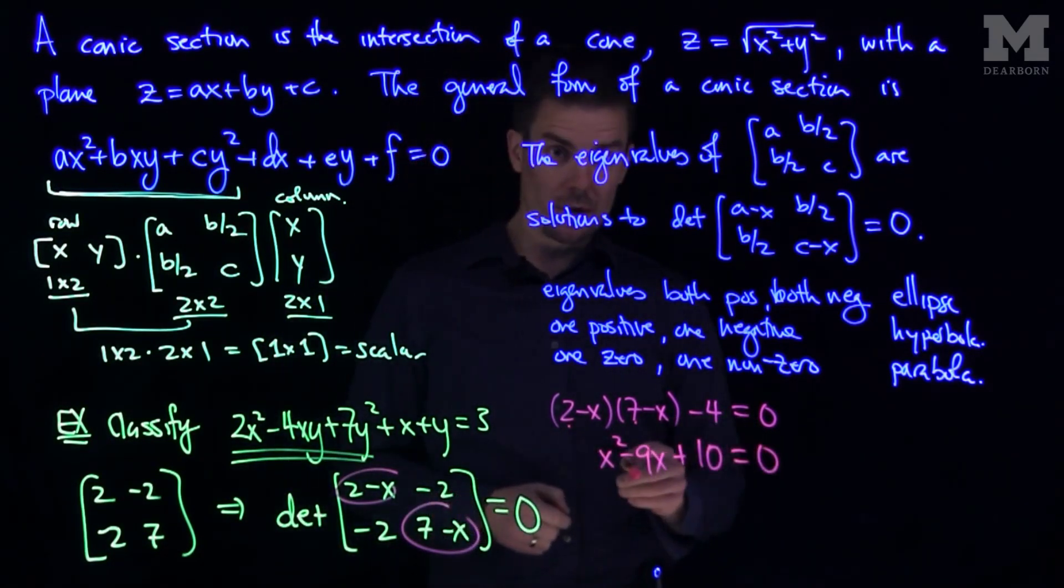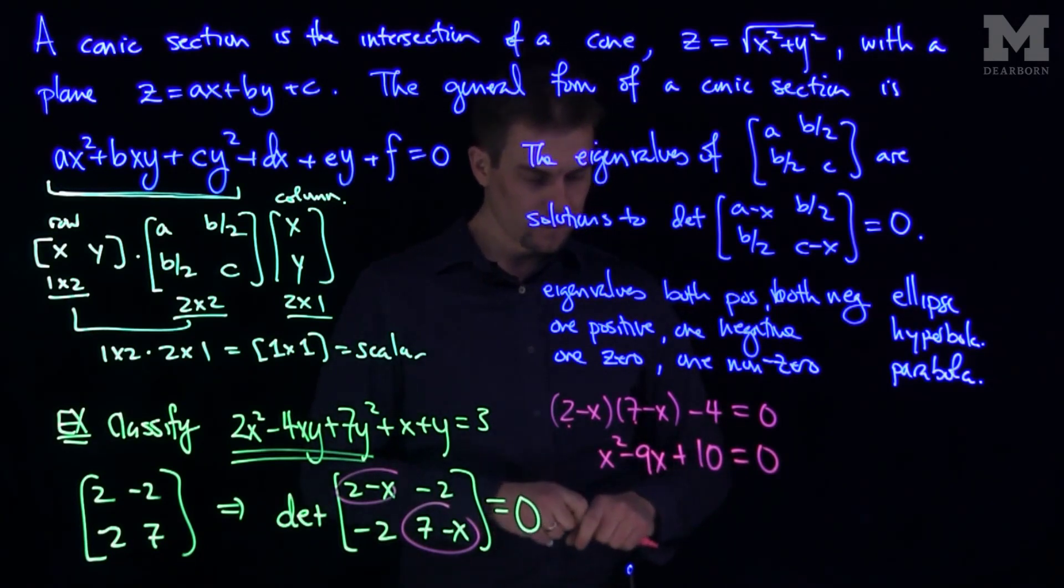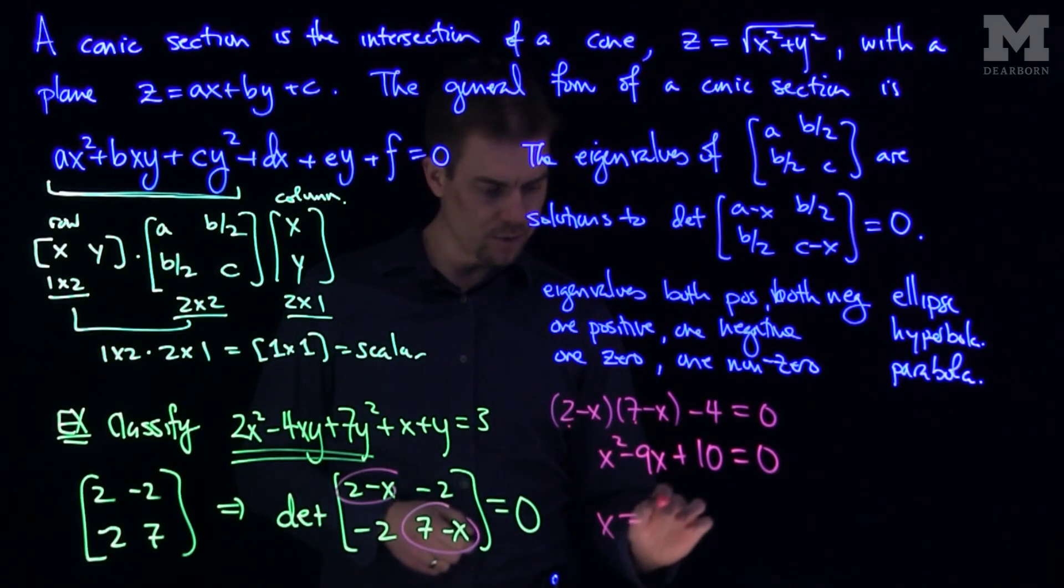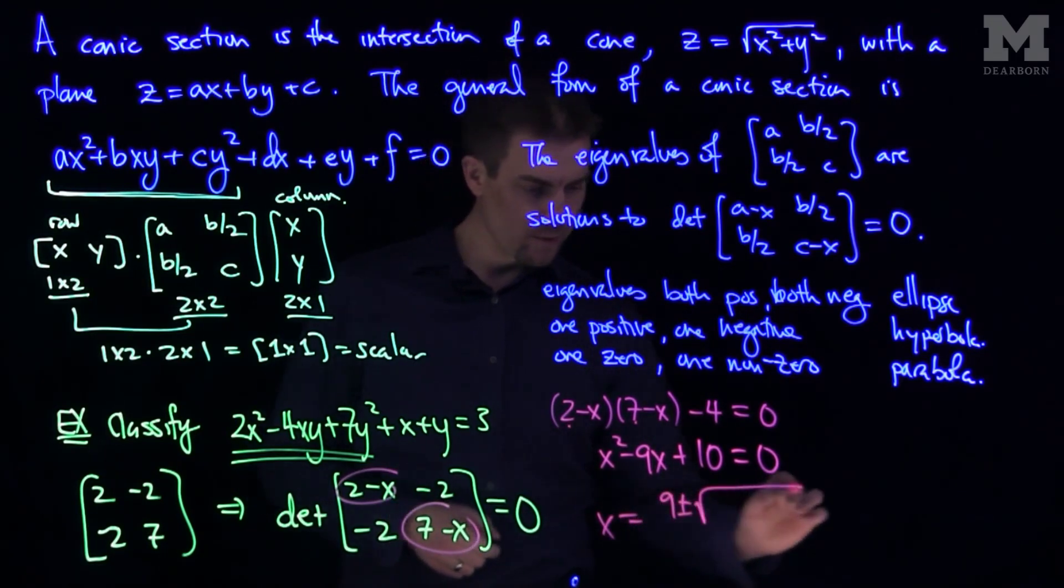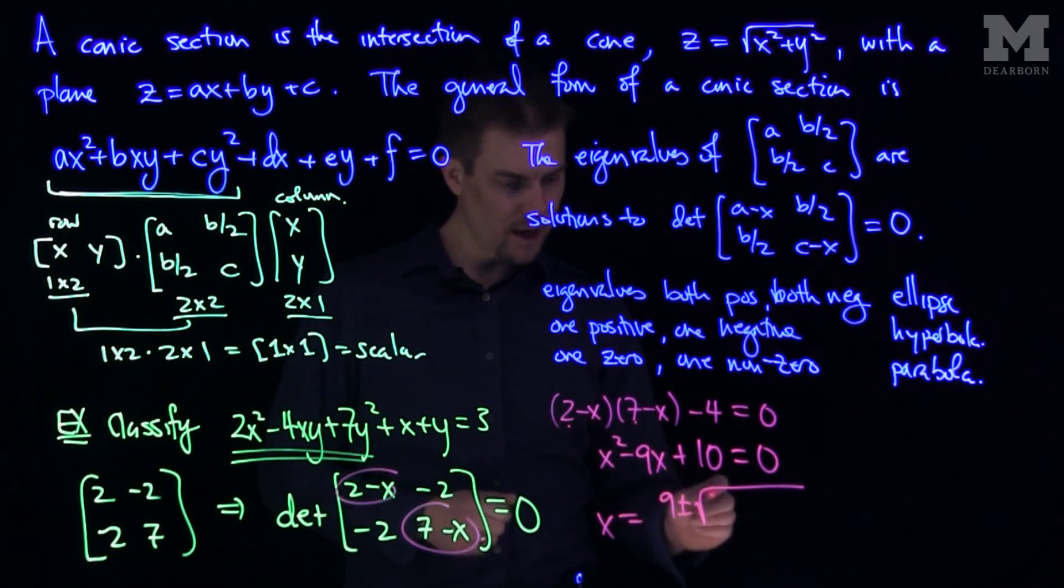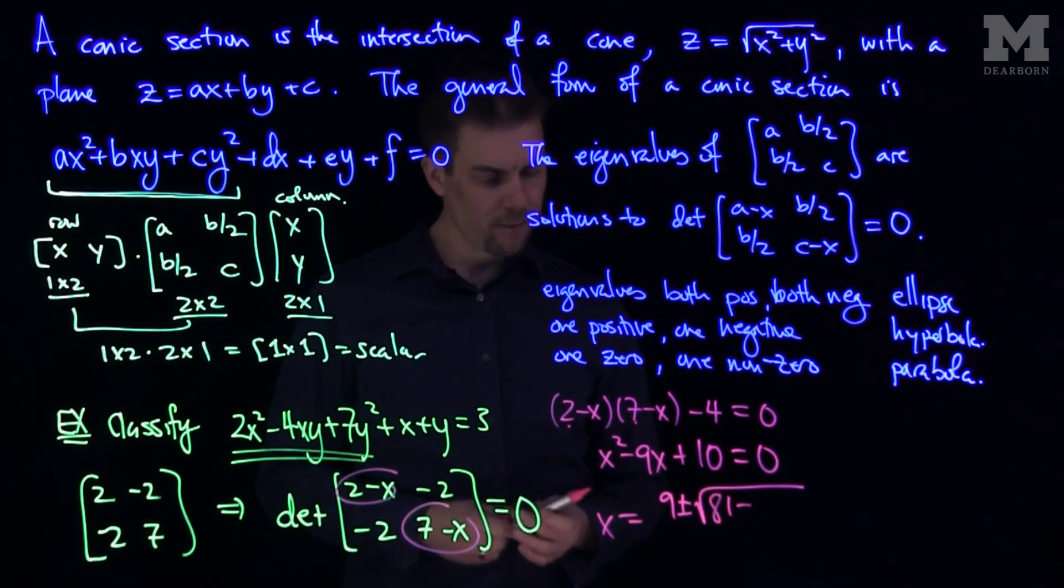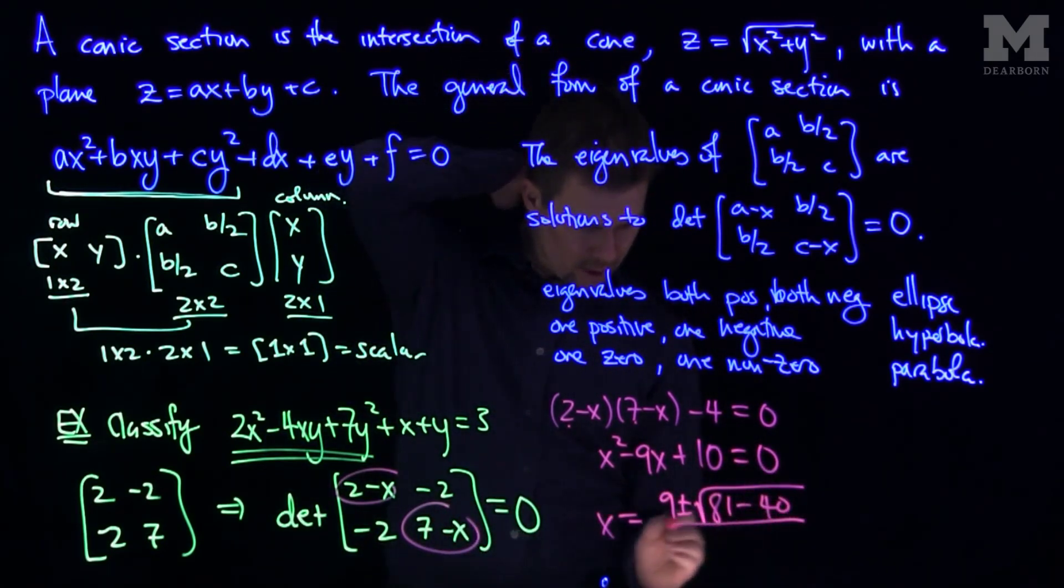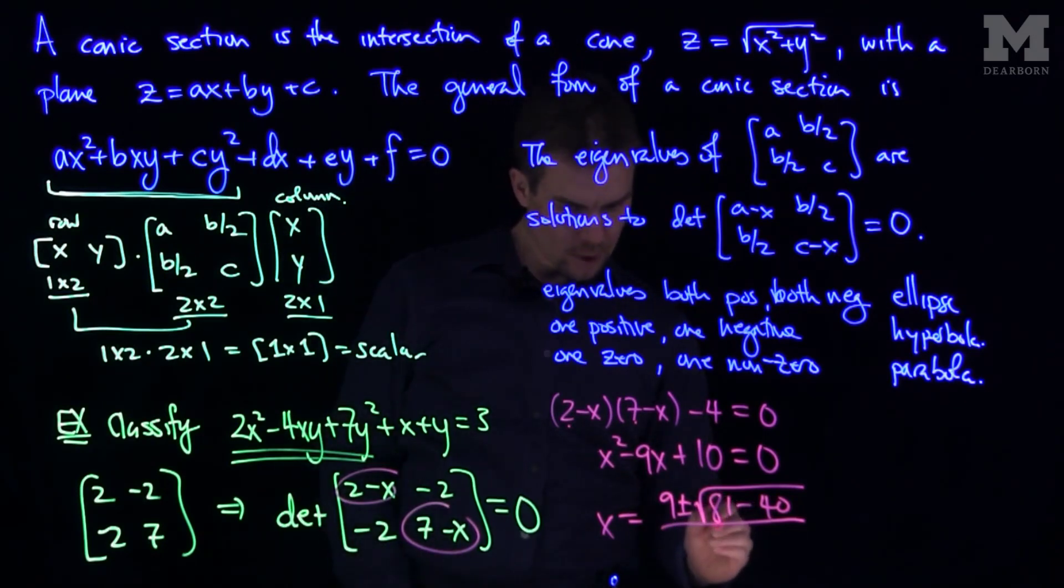And so what we can do is we can solve this by using the quadratic formula. So that will tell us, the quadratic formula tells us that x is equal to 9 plus or minus the square root of b squared. So b squared is going to be 81, minus 4ac, so that's going to be 40, all divided by 2.